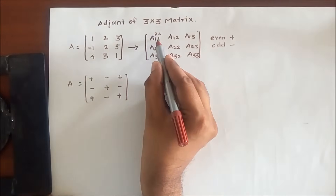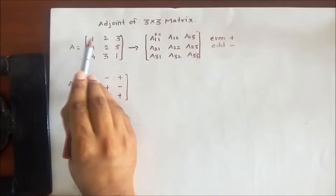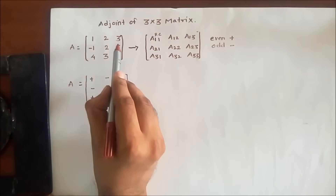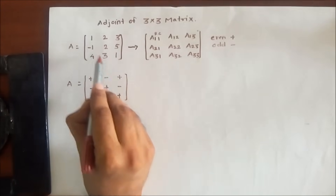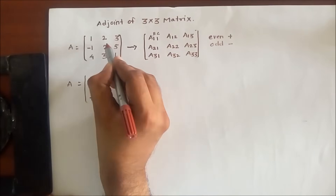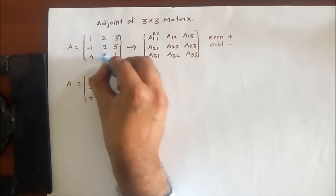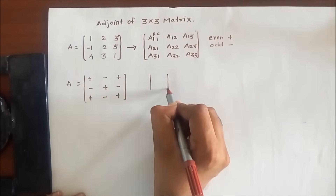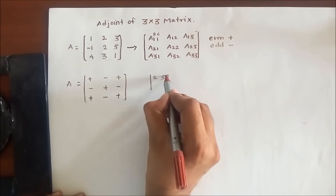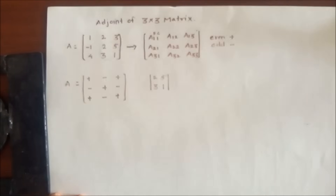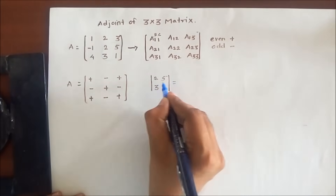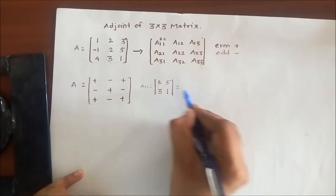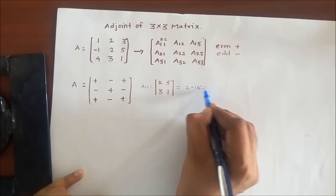Now for finding out A11, we have to hide row 1 and column 1. If we hide row 1 and column 1, then the remaining terms are 2, 5, 3, 1. So we have to take the determinant of this 2x2 matrix. For that purpose I will take that matrix aside and take the determinant of [2, 5; 3, 1].